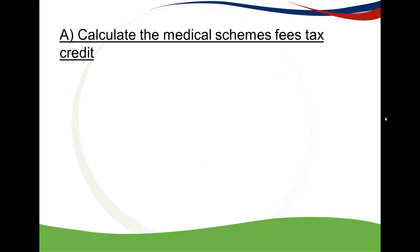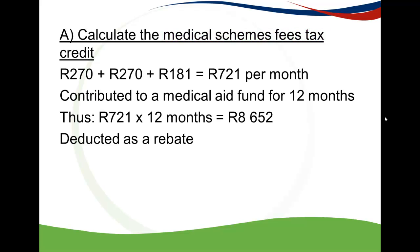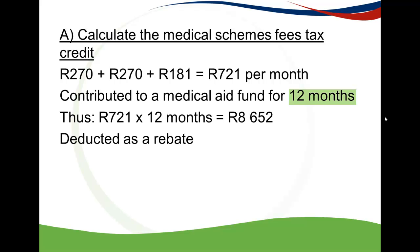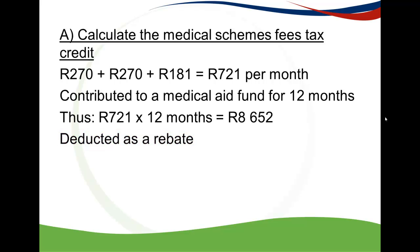To start off, we need to calculate the medical schemes fees tax credit — Part A. This is a fixed amount: 270 Rand for the first two people on the medical aid, and 181 Rand thereafter. So it is 270 for Rose, 270 for her husband, and 181 for her child, which comes to 721 Rand per month. Because she contributed to the medical aid fund for 12 months, we multiply by 12, and this amount is deducted as a rebate.